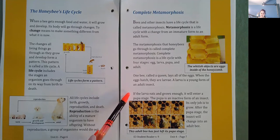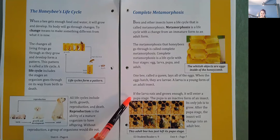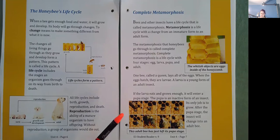If the larva eat and grow enough, it will enter a pupa stage. The pupa is an inactive form of an insect. Its only job is to grow. After the pupa stage, the insect will change into an adult bee.